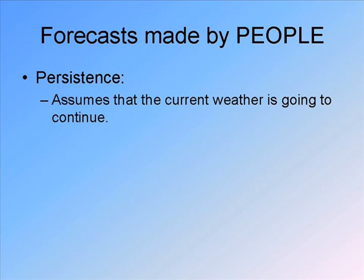On the other hand, when people are making forecasts, there are techniques they can use that don't involve complicated computer models. One technique would simply be something called persistence. A persistence forecast assumes that the current weather is just going to continue. If the last couple of days have been above normal temperatures, a persistence forecast says a good guess is that it will continue to be above normal. If it has been a dry spell, a good guess is that it will continue to be dry.